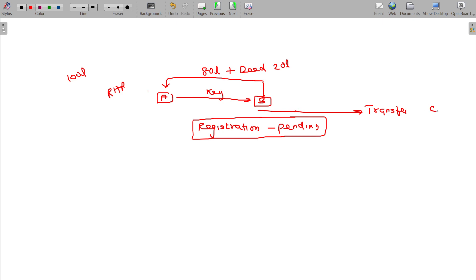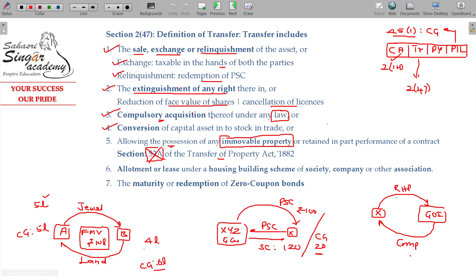Registration is pending. So allowing the possession of any immovable property in part performance of a contract - when possession happens as part performance of contract, that is called transfer.